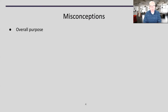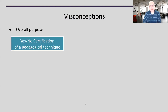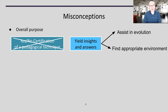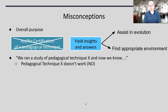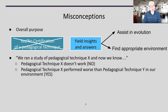Another misconception is about the overall purpose of an empirical study. The purpose is not to get a yes or no, up or down certification of a technique. Rather, we're really trying to get answers and insights: do we need to modify the technique, evolve it, or is there an environment where it works better or worse? For example, instead of saying 'we ran a study of pedagogical technique X and now we know it doesn't work,' a more reasonable result would be 'pedagogical technique X performed worse or better than pedagogical technique Y in our environment.'